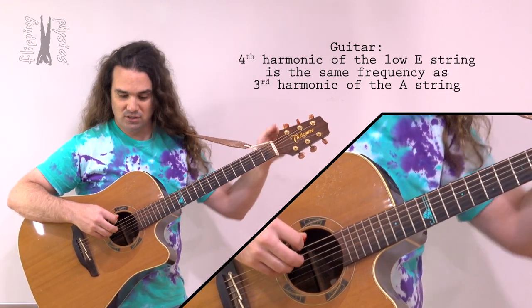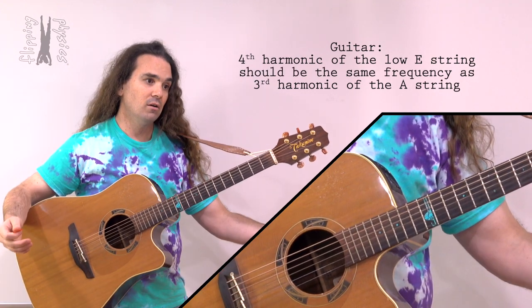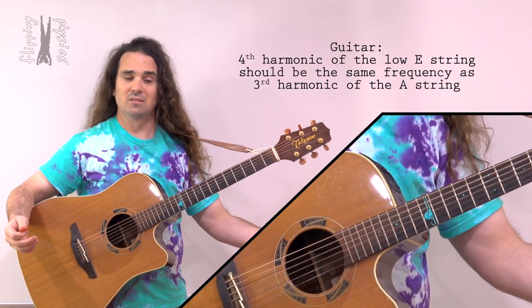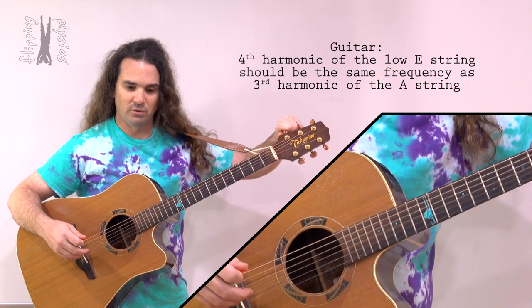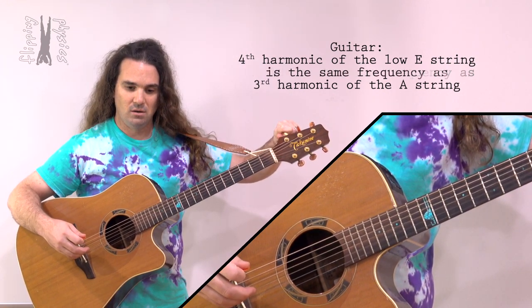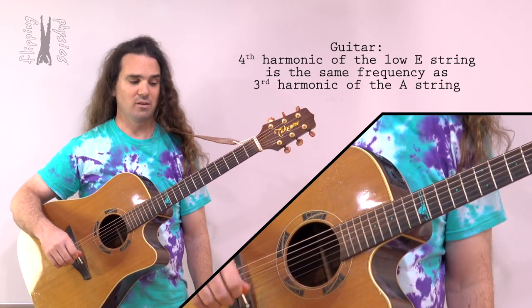However, if one of the strings is slightly out of tune, then what you hear is beats. And what you can do is you can then adjust the frequency so you no longer hear beats and the two are in tune with one another.